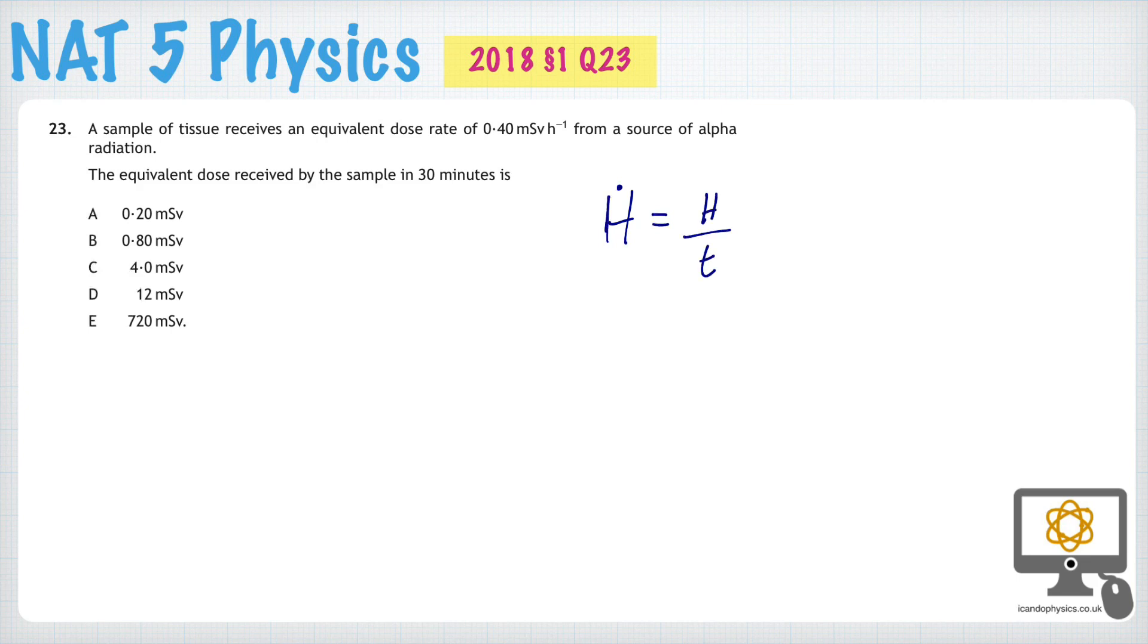where H dot is the equivalent dose rate, and the equivalent dose rate is given for us in this question. It's right here, 0.4 times 10 to the minus 3 Sieverts per hour, or 0.4 millisieverts per hour.